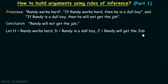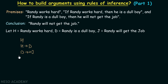We first need to convert these premises into propositional variable form. 'Randy works hard' can be rewritten as H. 'If Randy works hard then he is a dull boy' can be rewritten as H implies D. And 'if Randy is a dull boy then he will not get the job' can be rewritten as D implies not J. Our conclusion would be therefore not J, since 'Randy will not get the job' is not J.